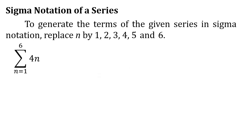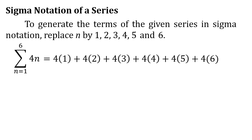For example, to generate the terms of the given series in sigma notation, replace n by 1, 2, 3, 4, 5, and 6. So we have the sum of 4n as n goes from 1 to 6. Changing n to 1, 2, 3, 4, 5, and 6, and taking the sum, we get 4 times 1 plus 4 times 2 plus 4 times 3 plus 4 times 4 plus 4 times 5 plus 4 times 6.